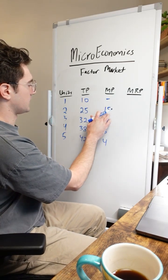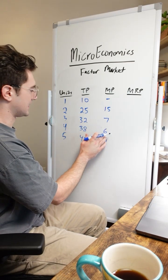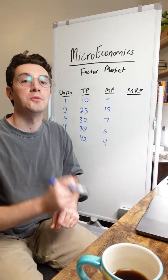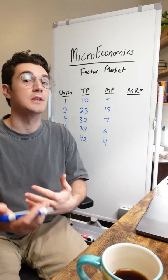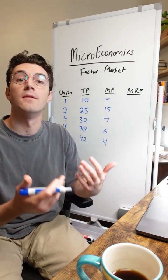All I did there was 25 minus 10 is 15, 32 minus 25 is 7, 38 minus 32 is 6, and 42 minus 38 is 4. Marginal product is just the additional units of output or product that a given factor or given unit of a factor generates.